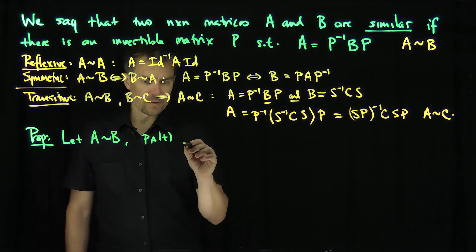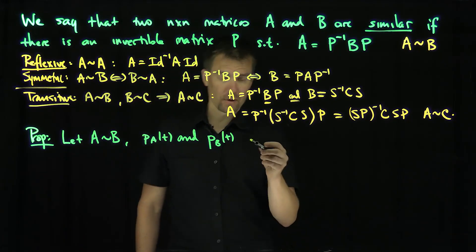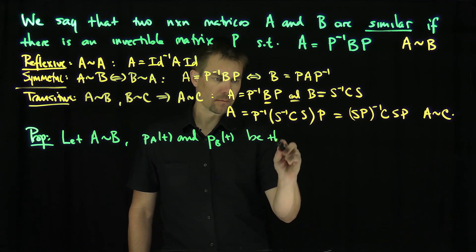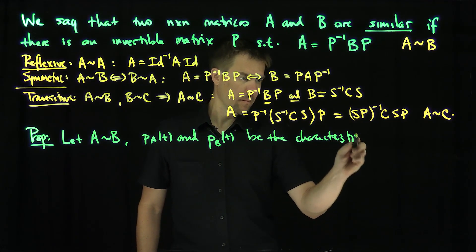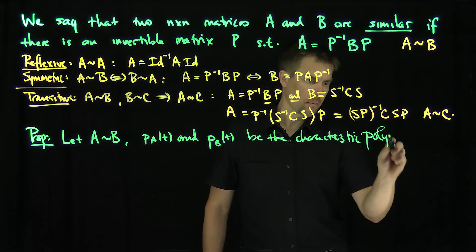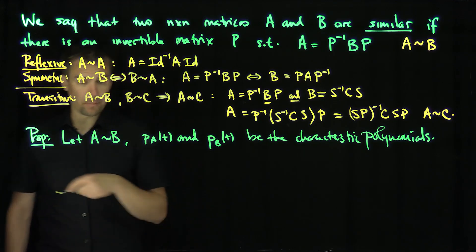P_B(t) be the characteristic polynomials. Then P_A(t) equals P_B(t).